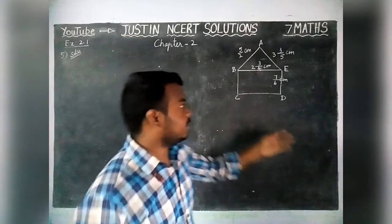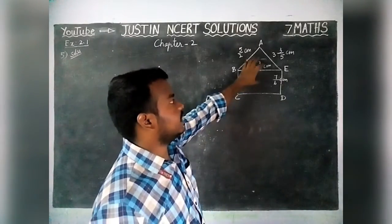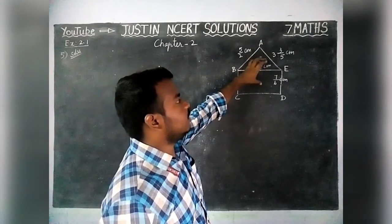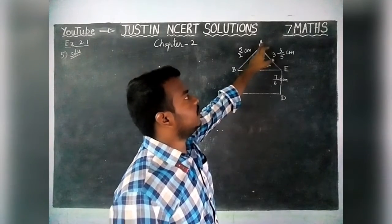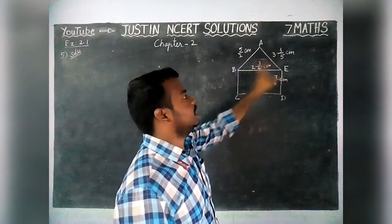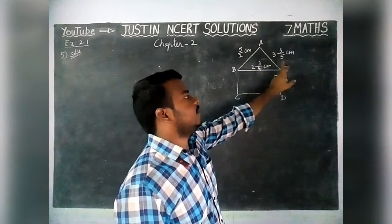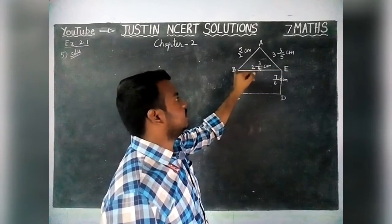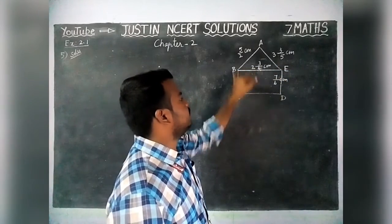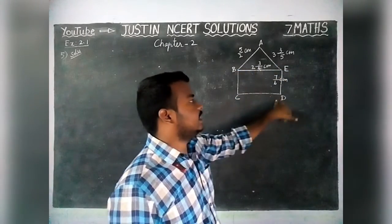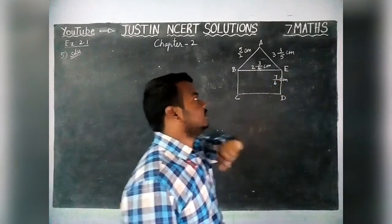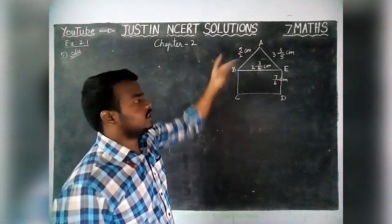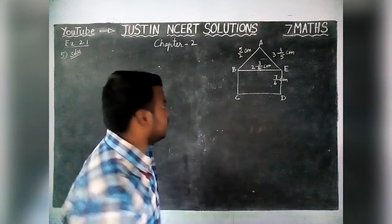Here they are given a diagram. From this, we have to find the perimeter of triangle ABE, and we have to find the perimeter of rectangle BCDE. The values are given as fractions. Now we are going to find the answers.